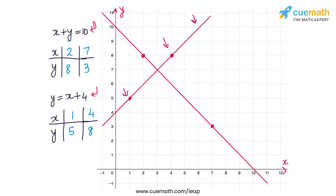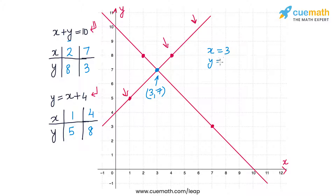We can see that these two lines intersect at the point (3,7). This point represents the solution of this pair of equations. The coordinates give us x equal to 3 and y equal to 7, which means the number of boys is 3 and the number of girls is 7 who participated in the quiz. That completes part 1. Now let's go to part 2.